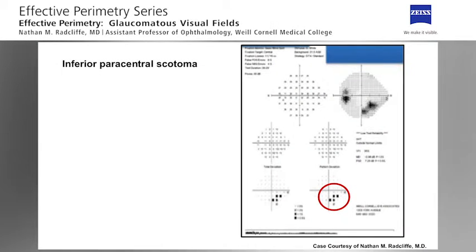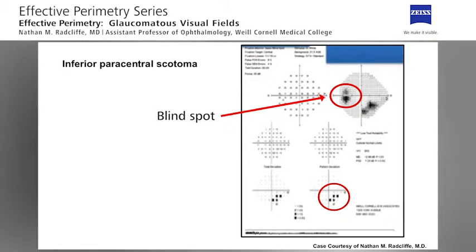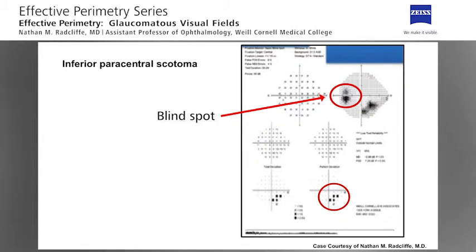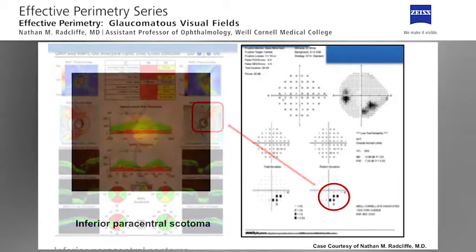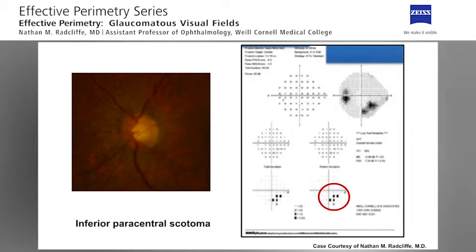Here is a visual field test for a 68-year-old man with an inferior paracentral scotoma. On this visual field, despite high fixation losses, we see the blind spot on the gray scale and we notice zero sensitivity in the region of the blind spot, indicating that despite the fixation losses, the visual field test may be reliable. Examination of the OCT report reveals superior retinal nerve fiber layer loss that corresponds perfectly to the visual field defect. The fundus photo corresponds as well, demonstrating a thin neuroretinal rim and corresponding retinal nerve fiber layer loss superiorly.